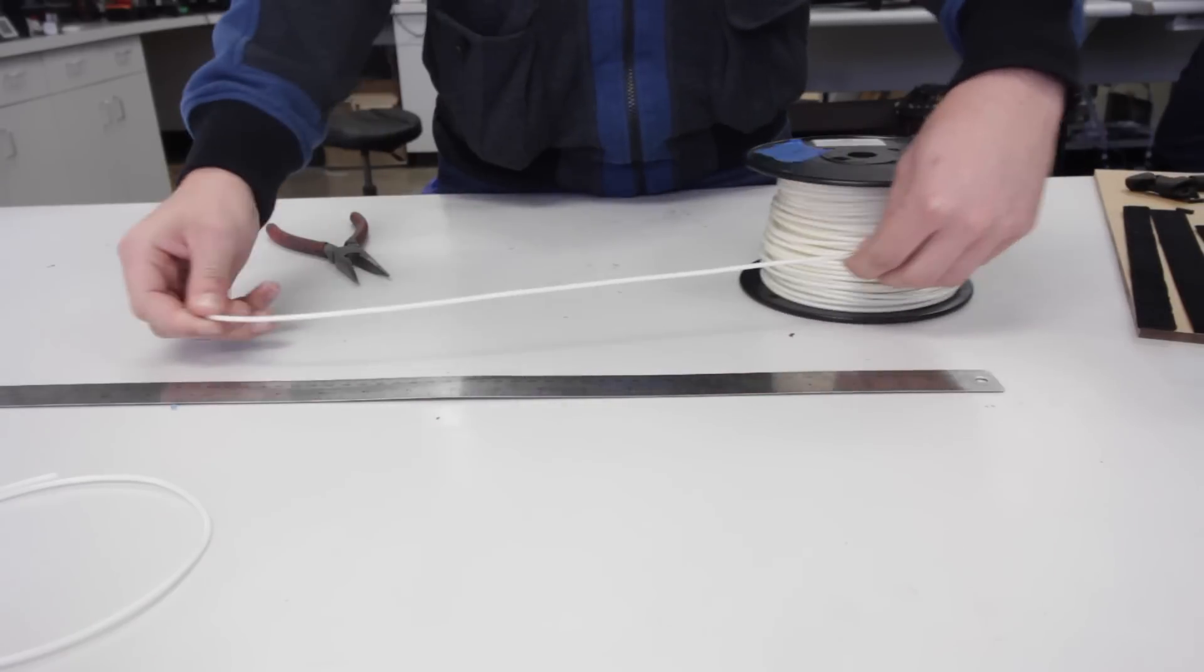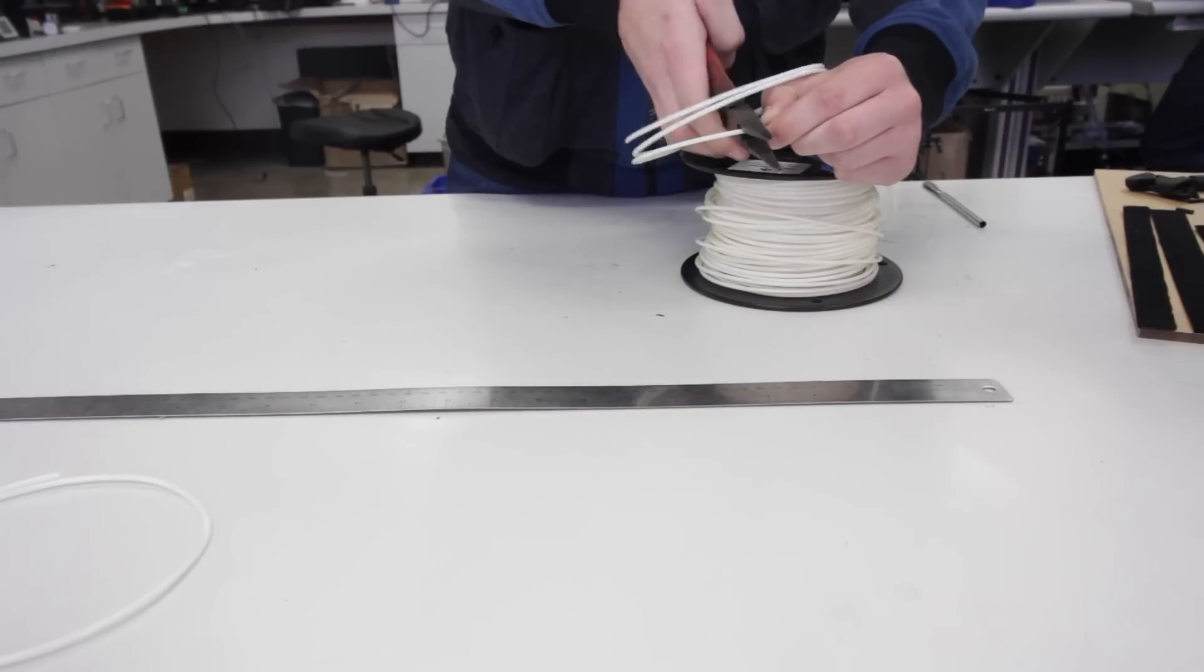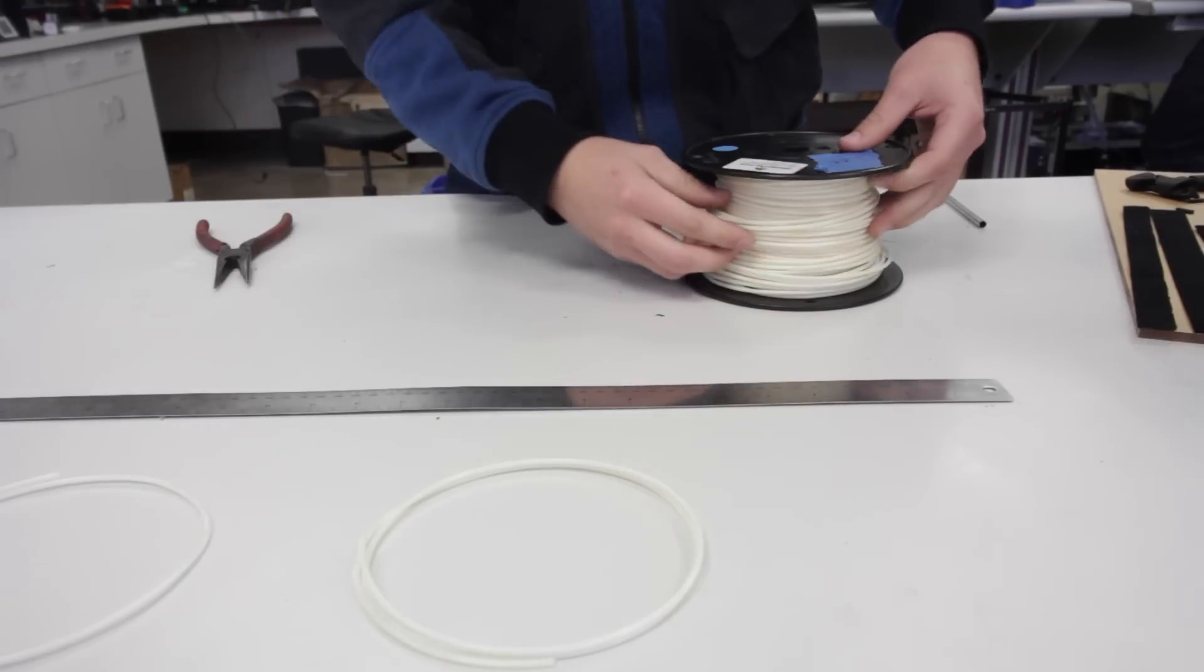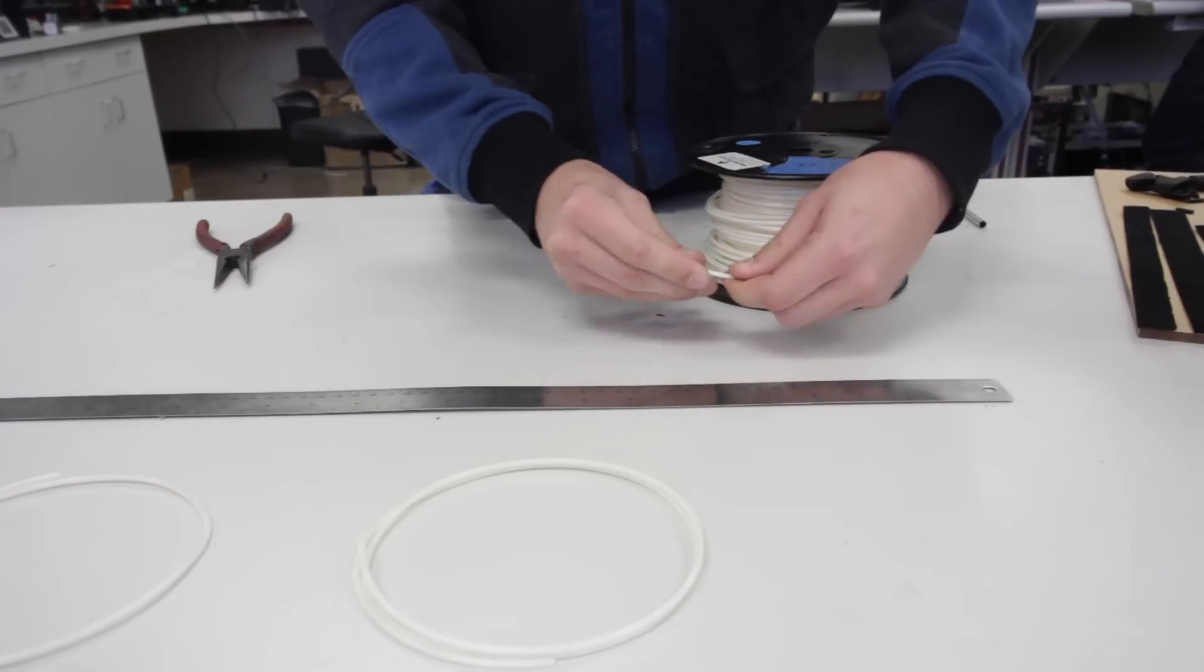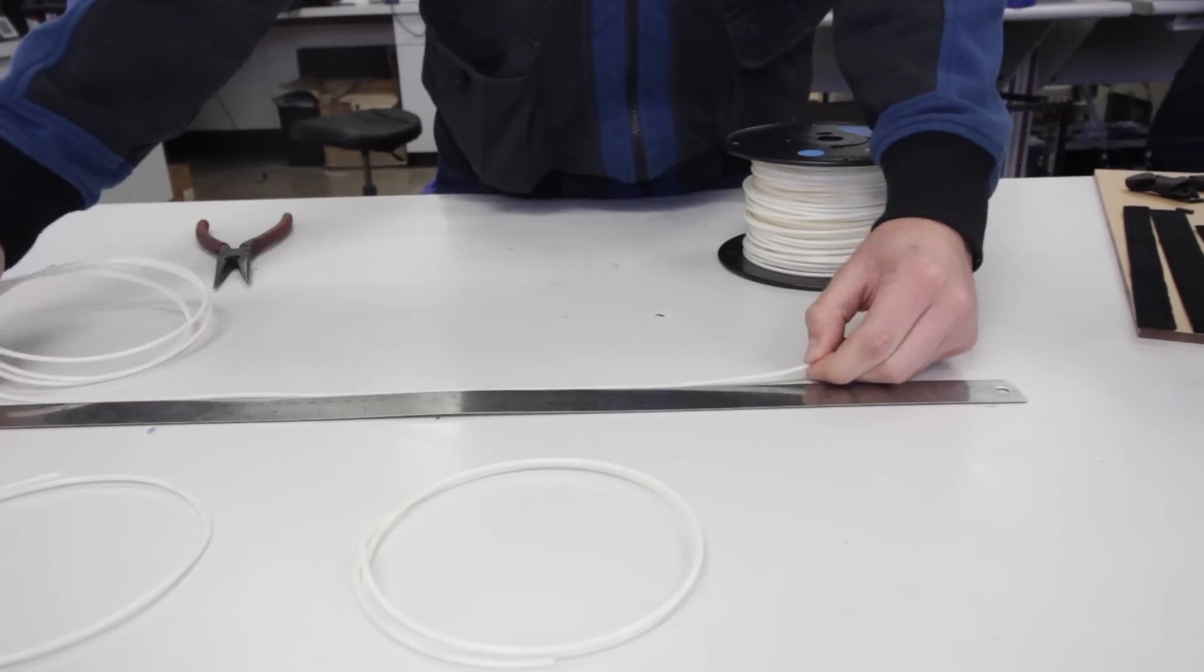For ABS glue, measure out 100cm of your filament, or 10 grams of scraps. For ABS slurry, measure out 250cm of ABS filament, or 25 grams of scraps.